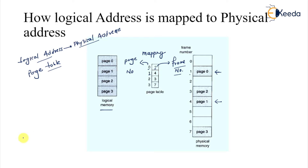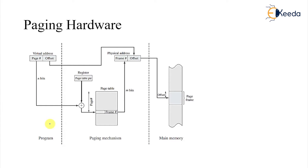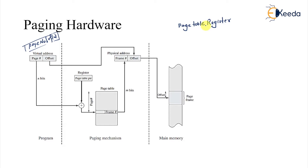This is the complete paging hardware. The virtual address is divided into a page number part and an offset value. There is a page number and there is an offset part. We also have a new hardware register called the Page Table Base Register (PTBR), which holds the base address of the page table in main memory.